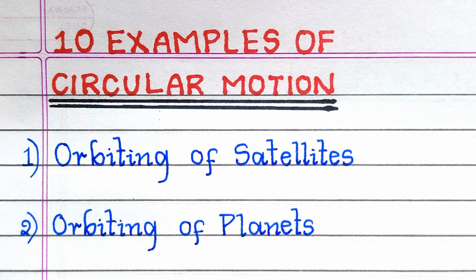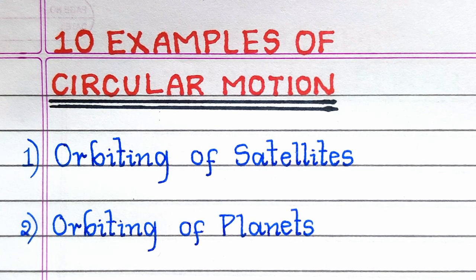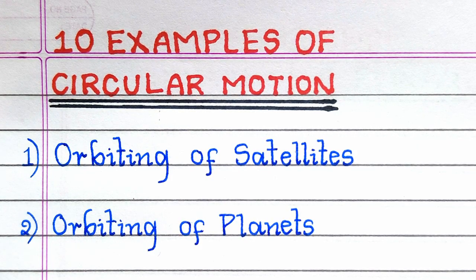The first example of circular motion is orbiting of satellites. The second example is orbiting of planets.